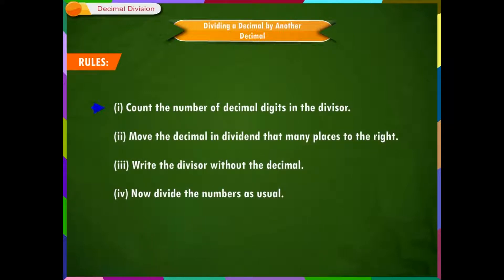Dividing a decimal by another decimal. Rules: 1. Count the number of decimal digits in the divisor. 2. Move the decimal in dividend that many places to the right. 3. Write the divisor without the decimal. 4. Now divide the numbers as usual. With these rules in mind, let us solve some division sums.